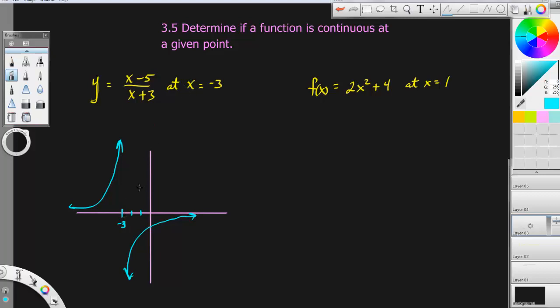Looking at this graph of this function right here, that is the graph of this, and we're asked to say yes or no to whether x equals negative 3 is continuous, if the graph is continuous at this point right here.